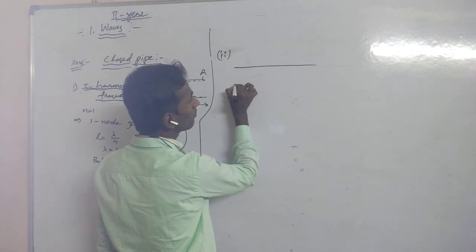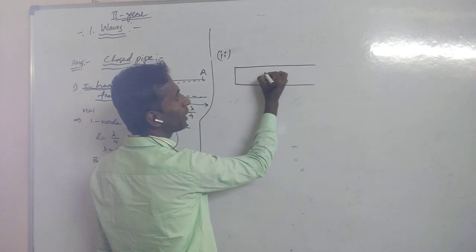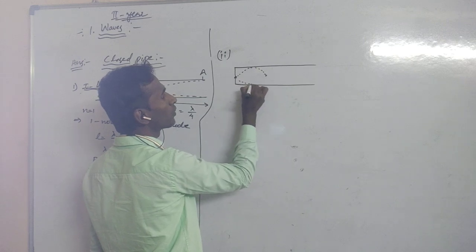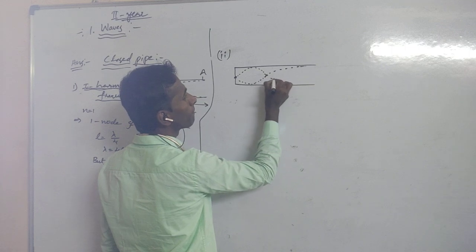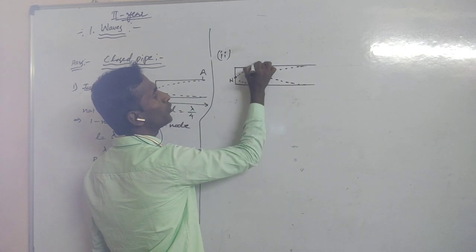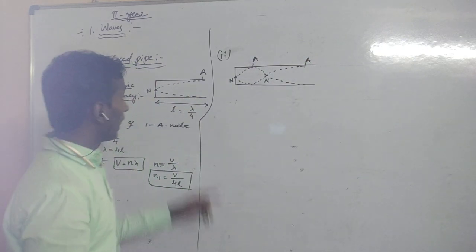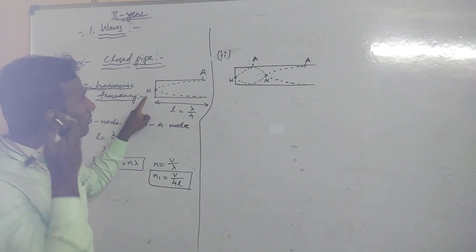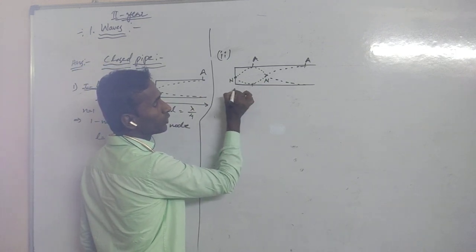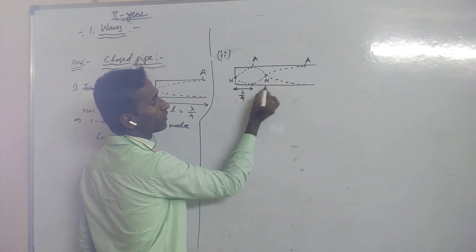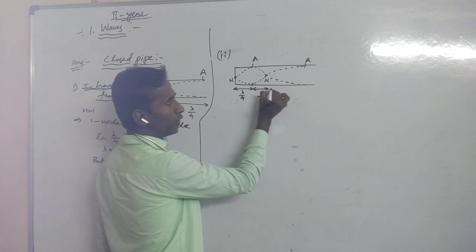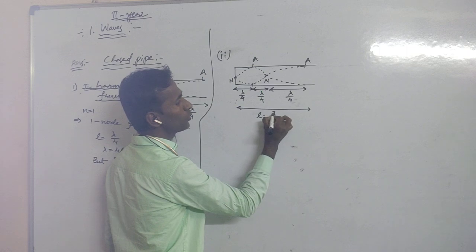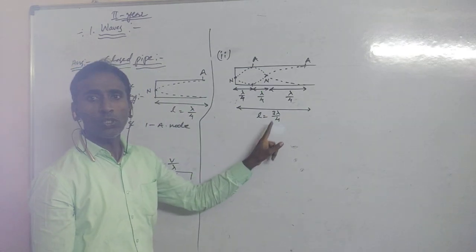I am drawing a diagram. When waves travel in this pipe for the third harmonic, it forms 2 nodes and 2 anti-nodes. The distance from node to anti-node is lambda by 4 each, giving three such distances, so L equals 3·lambda by 4.